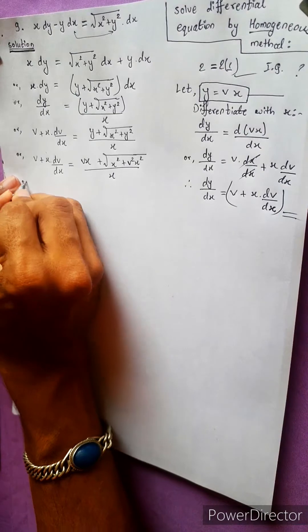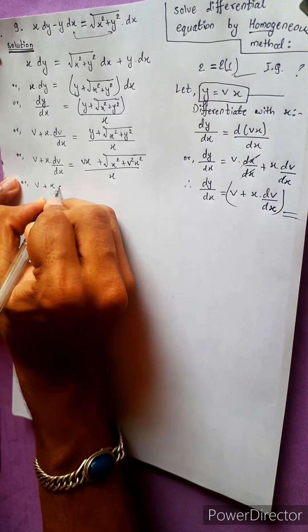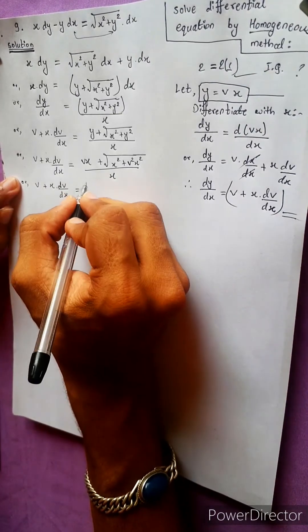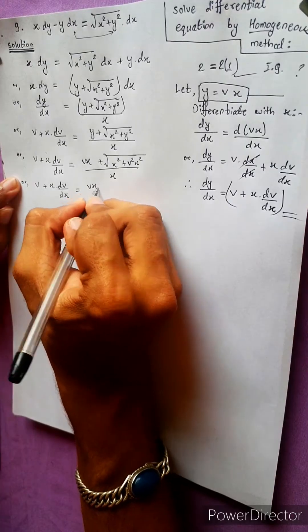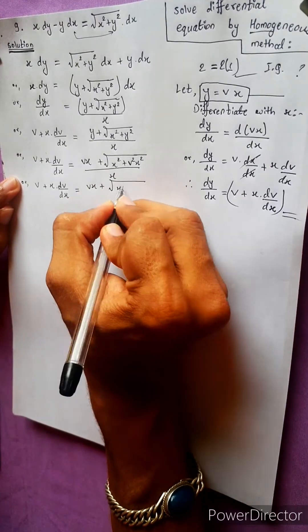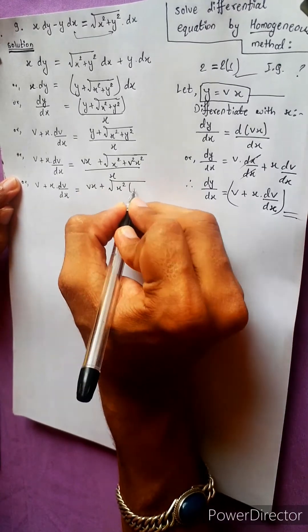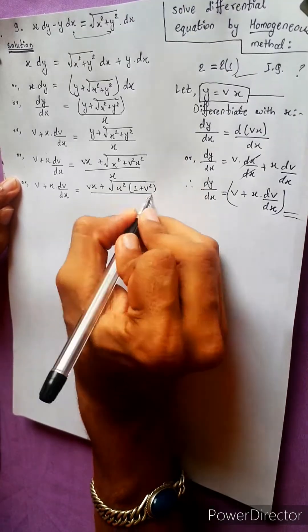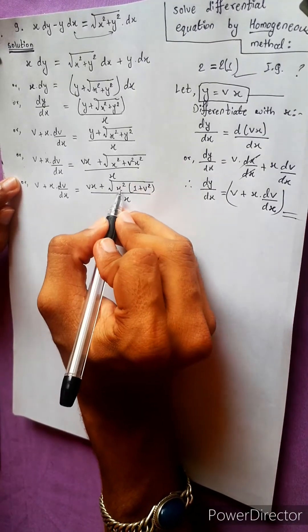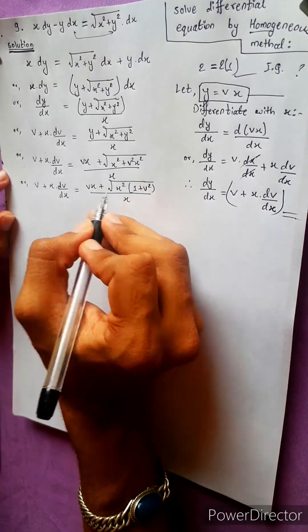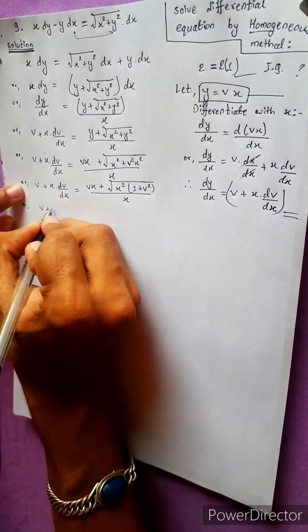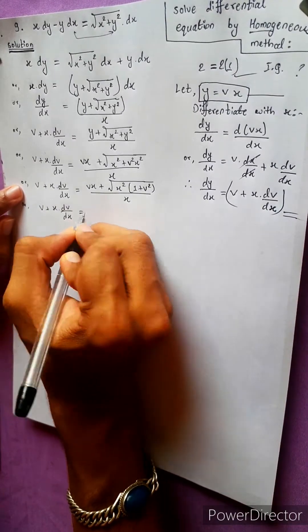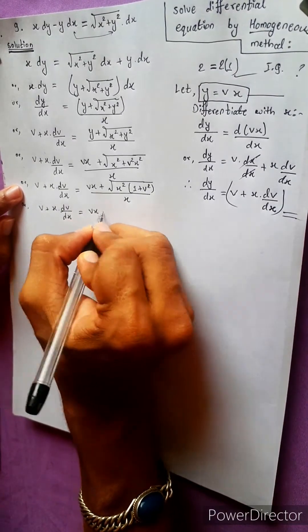So b plus x db by dx equals to bx plus x squared is common, giving 1 plus b squared. We will see that x squared is common.